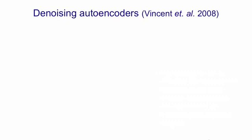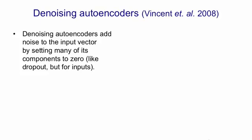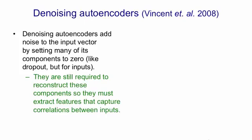However, there's a different kind of autoencoder that does work as well: the denoising autoencoder, studied extensively by the group in Montreal. Denoising autoencoders work by adding noise to each input vector by setting many of the components to 0, but with different components zeroed for different input vectors. This resembles dropout, but it's for the inputs rather than the hidden units. The denoising autoencoder is still required to reconstruct the inputs that have been set to 0, so it can't just copy its input. It has to use hidden units to capture correlations between the inputs so that it can use the values of some inputs to help reconstruct the inputs that have been zeroed out.